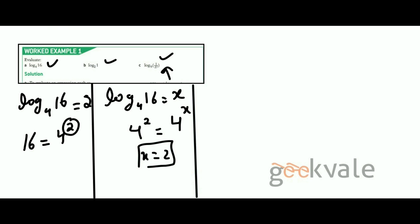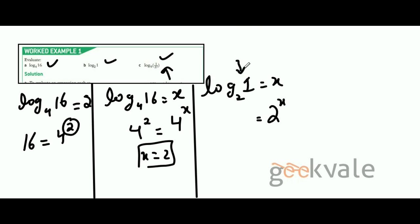Now look at the next question: log base 2 of 1. Call the answer x. Whatever 2 to the power x equals is the answer — however you can represent 1 as a power of 2, that will be your x. We know that 1 equals 2 to the power of 0, since anything to the power of 0 equals 1. So x equals 0.